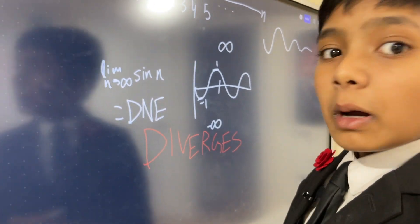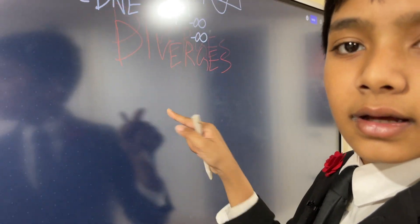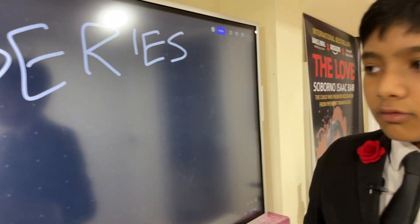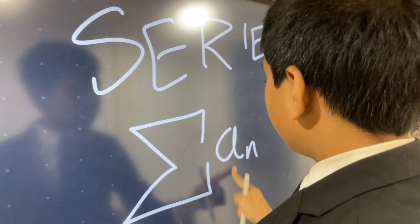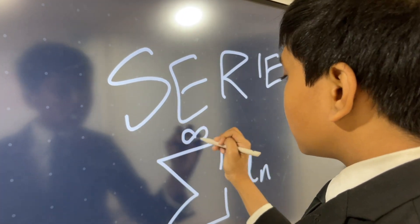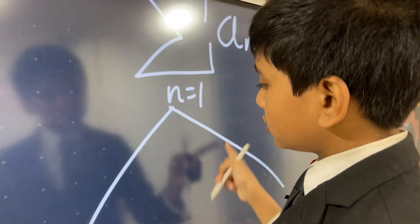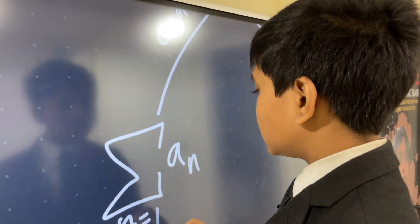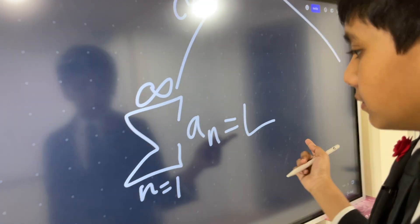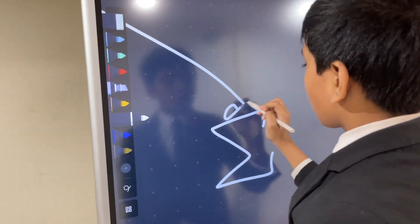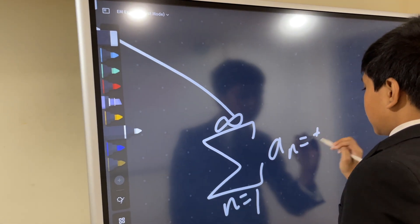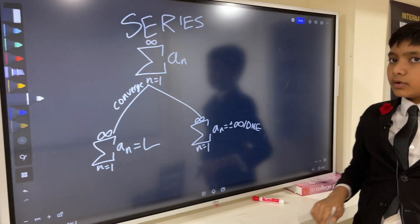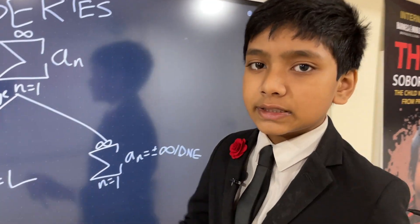We'll end with a preview of the next lesson. Next time we'll talk about infinite series, which is basically a sum of the terms of a sequence from n = 1 to infinity. Like sequences, series can converge or diverge. They converge if the sum approaches a specific finite value L, and they diverge under the same conditions as before — plus or minus infinity, or DNE. Think about this before you move to the next lesson. I'm Sabrina Isaac Barry from Barry Science Lab — see you in the next one.